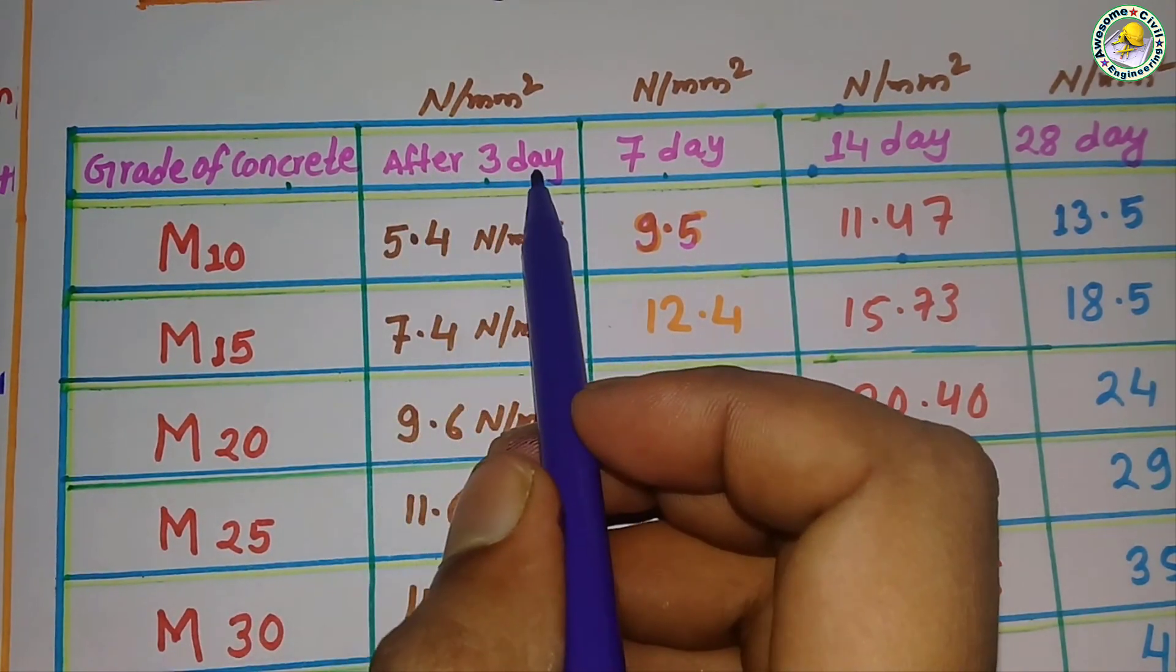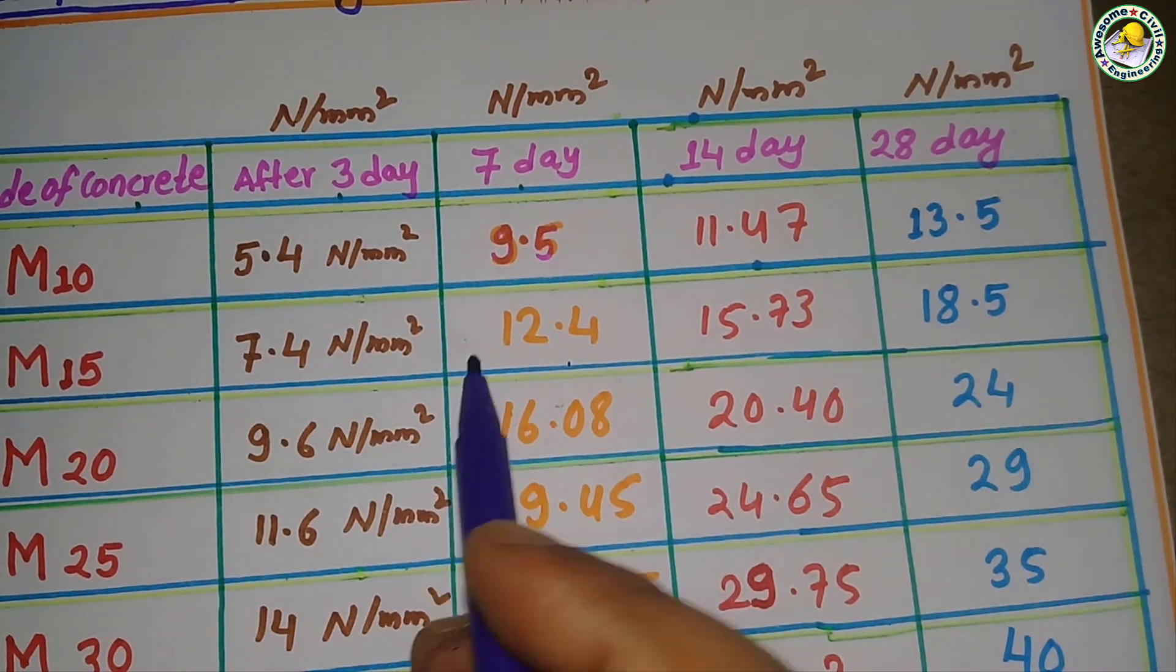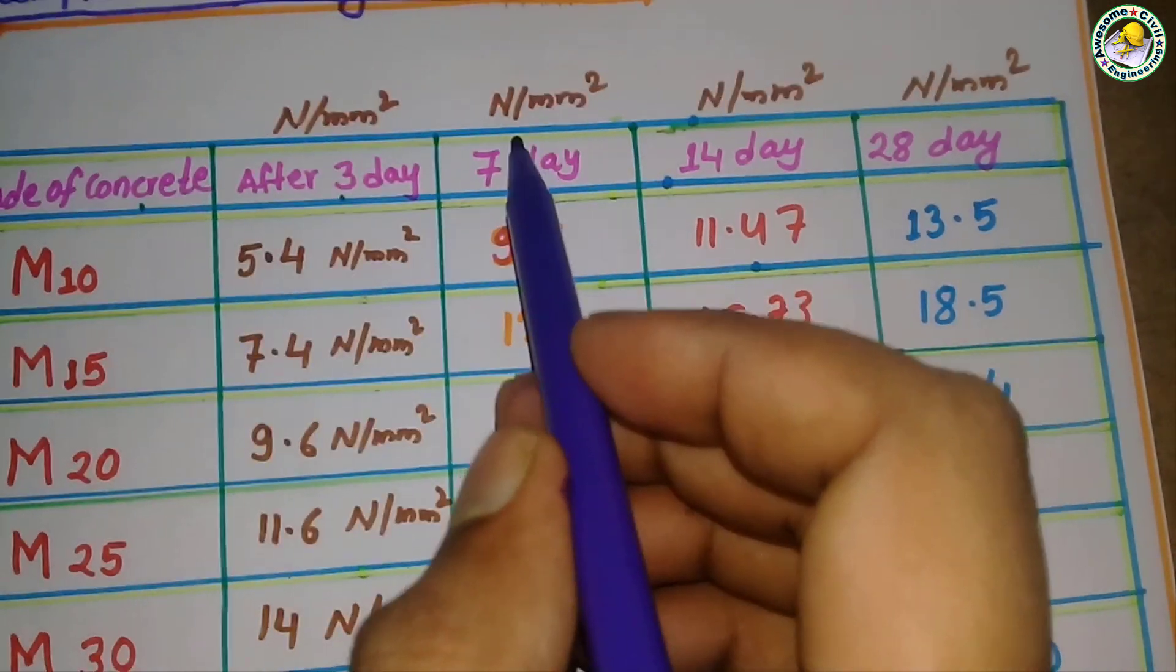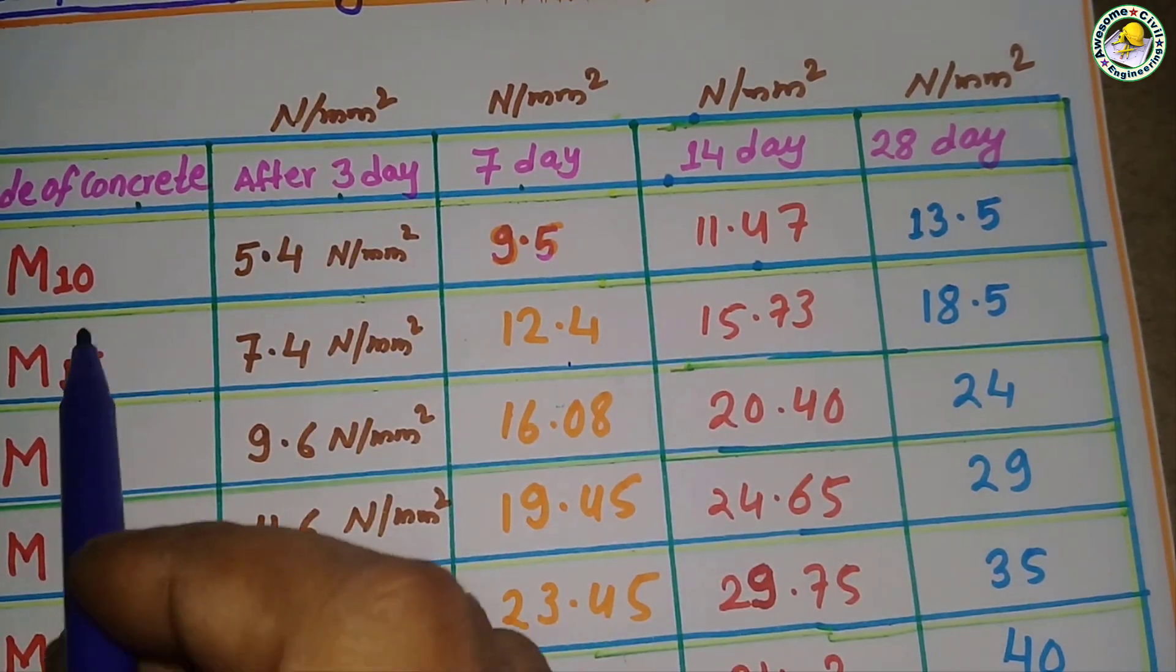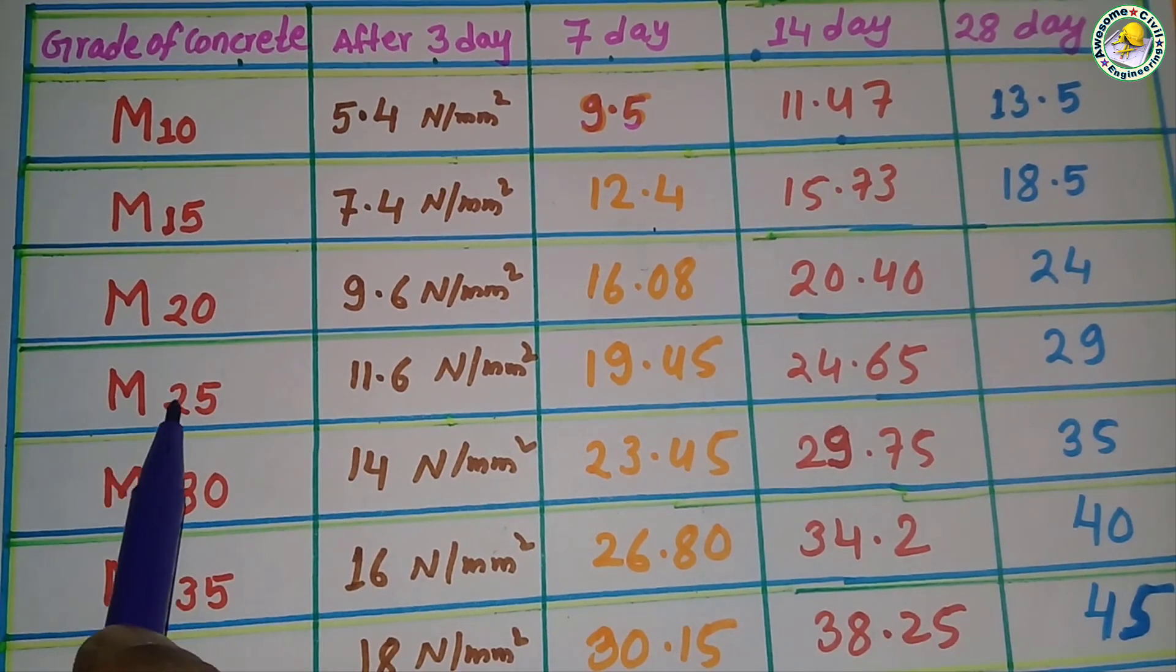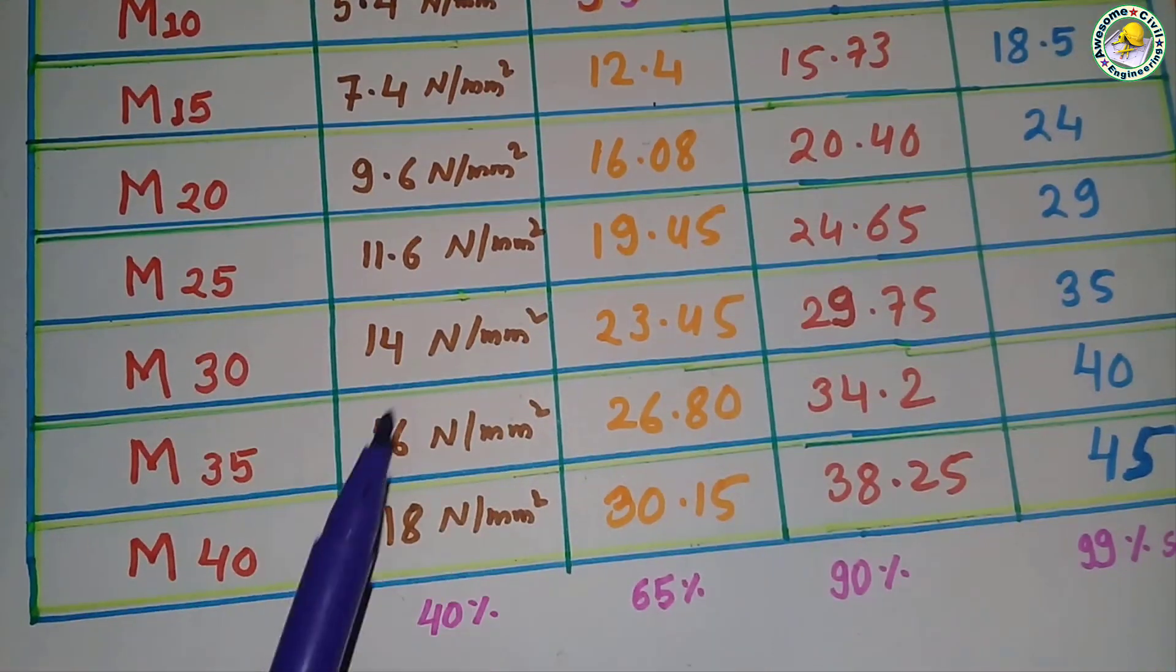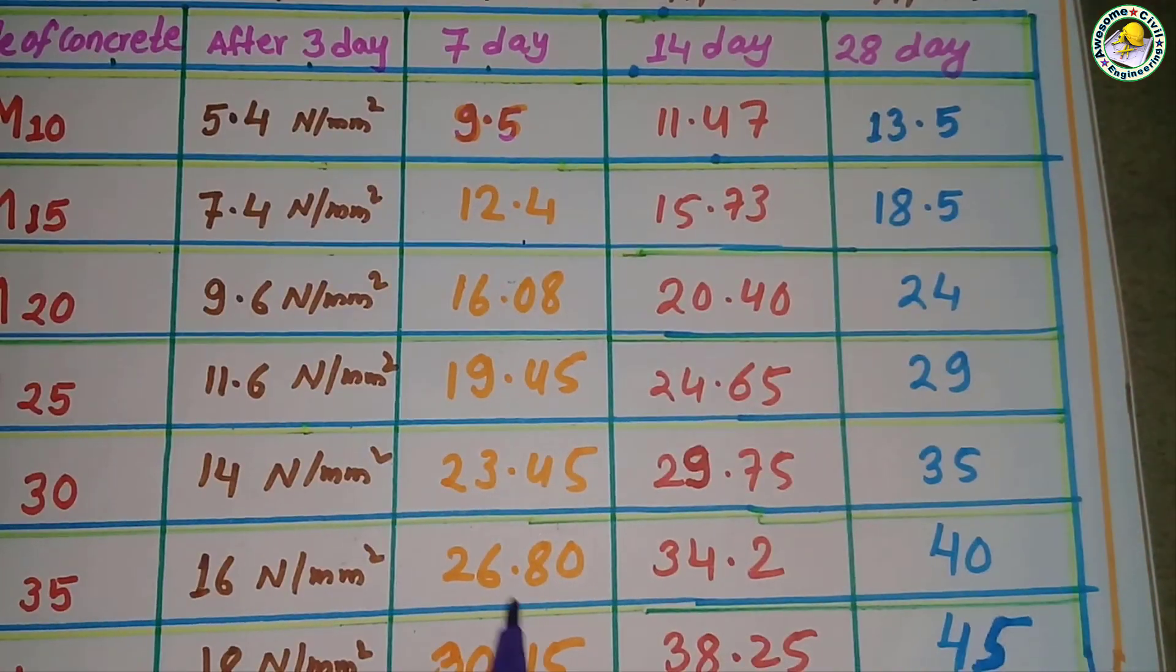After three days, seven days, 14 days, and 28 days, what is the report? And these all are in newton per mm square. For M10, M15, M20, M25, M30, M35, and M40. Here you can see in three days.